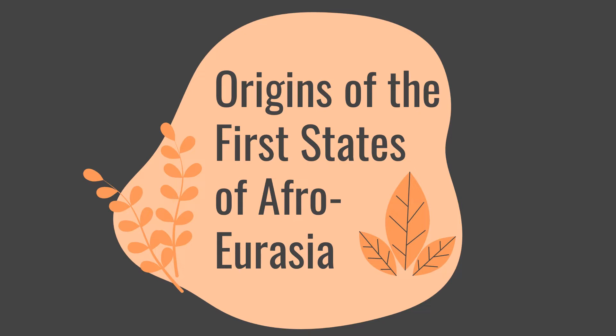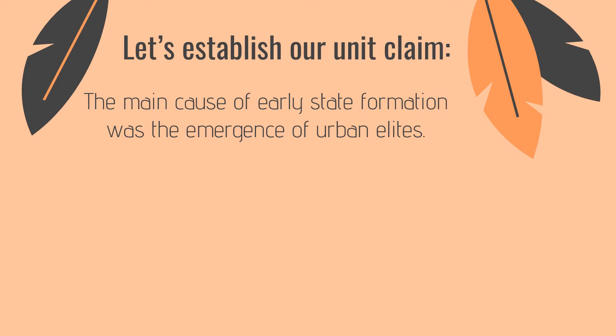So we're on our second lesson of the unit. It's called Origins of the First States of Afro-Eurasia. Let's establish our unit claim — we started this unit yesterday. The claim for this unit is going to be: the main cause of early state formation was the emergence of urban elites.